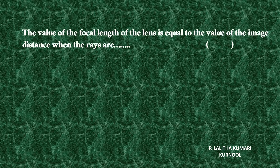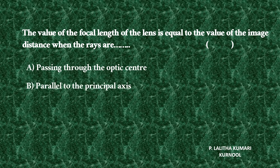The value of the focal length of the lens is equal to the value of the image distance when the rays are parallel. Your options are: Option A — passing through the optic center; Option B — parallel to the principal axis; Option C — passing through the focus; and Option D — in all cases.